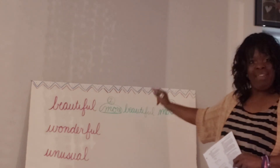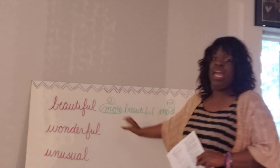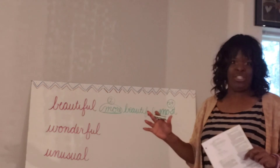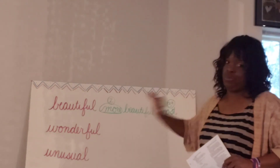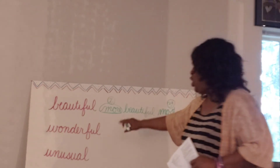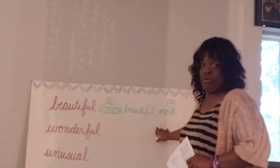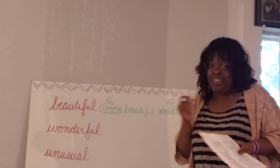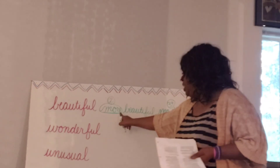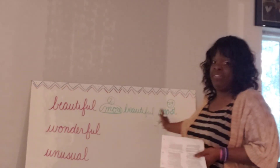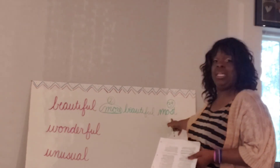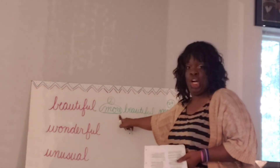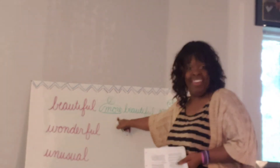So 'most' is for three or more, and 'more' is for two. That makes sense, right? Because we don't say 'beautifuler' or 'that is the beautifulest flower' — that's not correct English. We use 'more' and 'most.' You can think of it this way: -er connects to 'more,' and -est connects to 'most.'